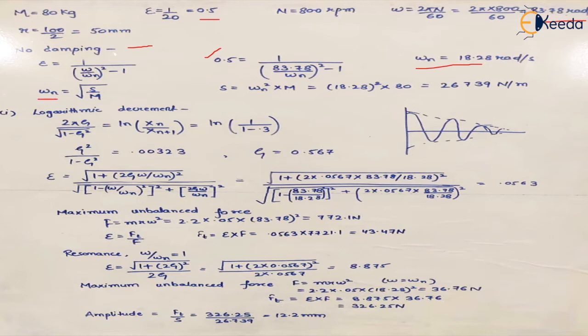We also know that omega_N equals the square root of S upon M, where S is the spring stiffness and M is the mass of the body, already given as 80 kg. So we can find the stiffness of the system, which is 26,739 N/m. This is the equivalent or combined stiffness of all four springs placed in parallel.